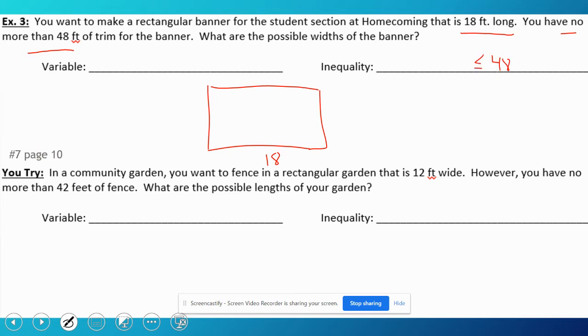48 feet of trim. So the most banner that we could use is 48, so it has to be less than or equal to 48. That's a key. What are the possible widths of the banner? So w is what we're finding, and I'm going to put that on my picture. So the other things on my picture: it's a rectangle, so the opposite sides are equal. So I have 18 plus 18, that's the length, so that's 36.